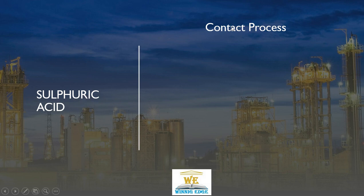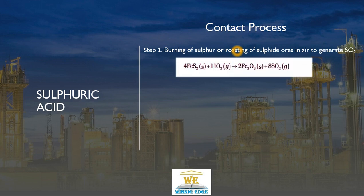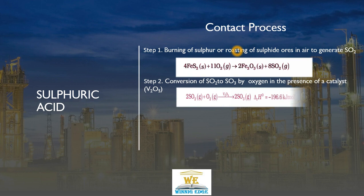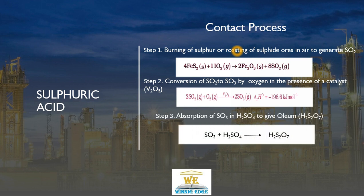Sulphuric acid is prepared using the contact process. The first step is getting Sulphur dioxide, either by burning Sulphur or by roasting an ore — Sulphur dioxide will be a by-product. The next step: Sulphur dioxide is converted into Sulphur trioxide using ample supply of Oxygen and Vanadium catalyst. It is an exothermic process. The third step: Sulphur trioxide produced is absorbed in Sulphuric acid to give us Oleum — pyrosulphuric acid, H2S2O7.